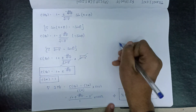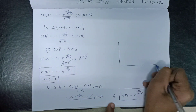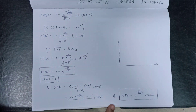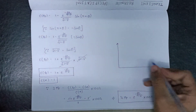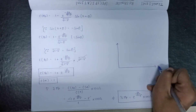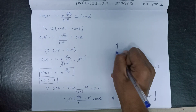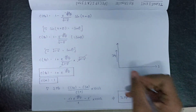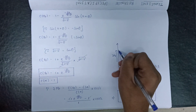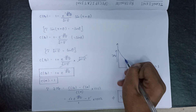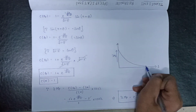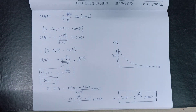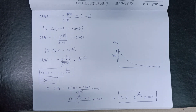Now let us study the time response graph of maximum overshoot. On the x-axis is delta, and on the y-axis is percentage MP, that is maximum overshoot. The graph is a decreasing curve starting at 100%. This is all about maximum overshoot. Thank you.